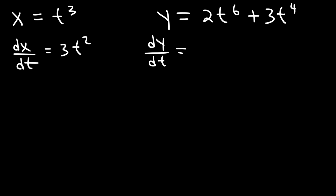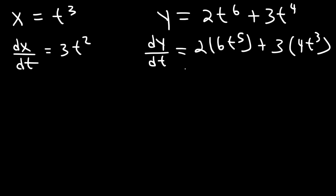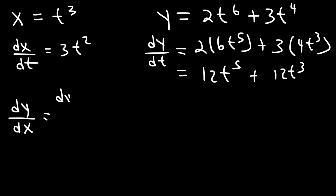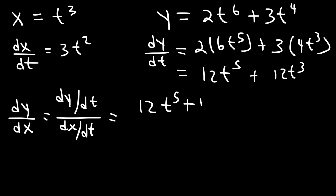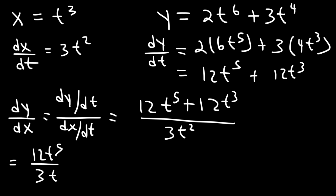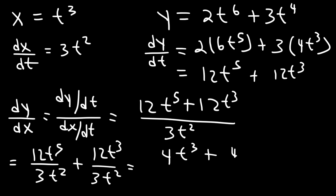And dy/dt — the derivative of t to the sixth is 6t to the fifth power, and the derivative of t to the fourth is 4t cubed. So dy/dt is going to be 2 times 6, or 12, t to the fifth, and 3 times 4 is also 12t cubed. So now dy/dx is dy/dt divided by dx/dt, which is 12t to the fifth plus 12t cubed divided by 3t squared. Separating into two fractions: 12/3 is 4, t to the fifth divided by t squared gives t cubed, and t cubed divided by t squared gives t. So dy/dx equals 4t cubed plus 4t. Keep in mind dx/dt is 3t squared — we'll need that later.